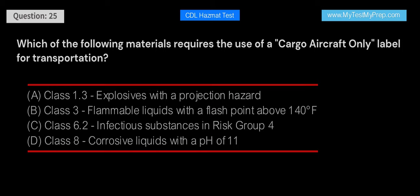Which of the following materials requires the use of a cargo aircraft-only label for transportation? A. Class 1.3 Explosives with a Projection Hazard. B. Class 3 Flammable Liquids with a flashpoint above 140°F. C. Class 6.2 Infectious Substances in Risk Group 4. D. Class 8 Corrosive Liquids with a pH of 11. Answer: C. Class 6.2 Infectious Substances in Risk Group 4 require the use of a cargo aircraft-only label for transportation. These materials are considered too dangerous to transport on passenger aircraft.